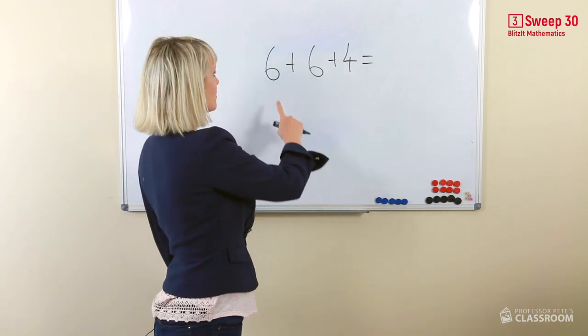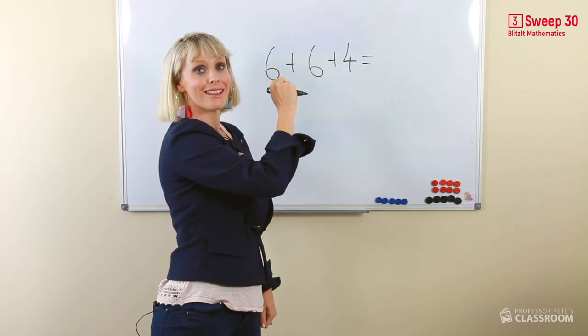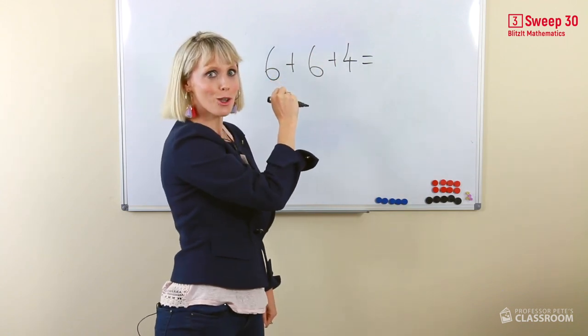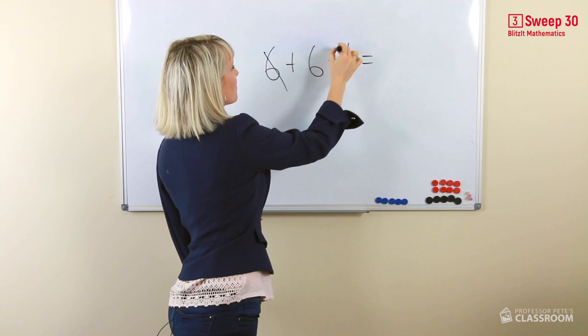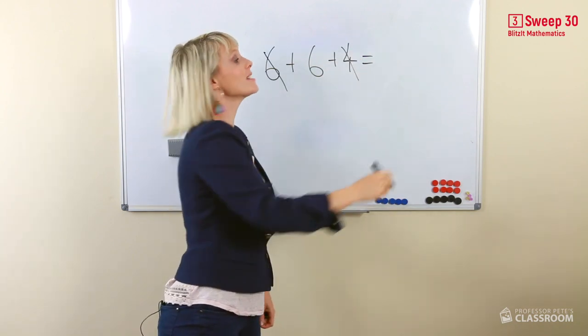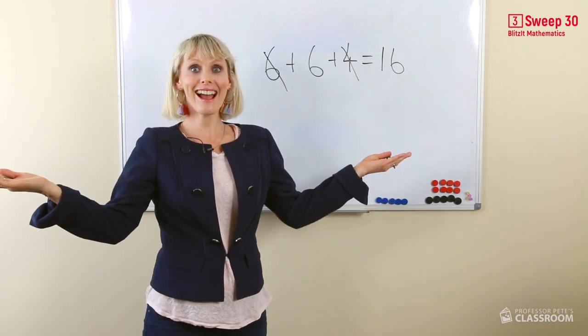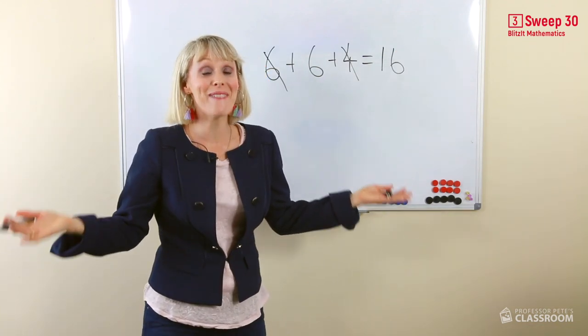Make a 10. Now, 6 and 6 equals 12. 6 and 4 equals 10. We're going so fast. Now, we know that 10 and 6 equals 16. Ta-da! Oh my goodness, this is amazing!